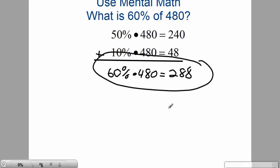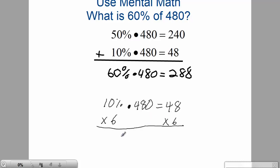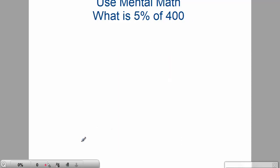Another way you could go about this is just using the 10% rule. 10% of 480 is 48. Multiply both sides by 6: 10% times 6 is 60%, 48 times 6 is 288. Either way, your answer is going to be the same.